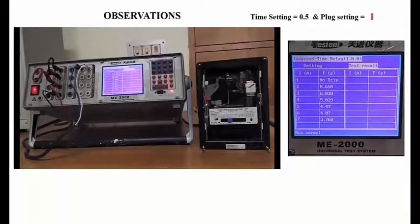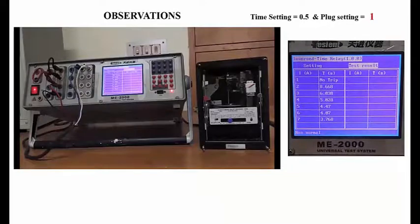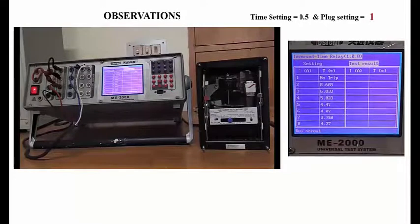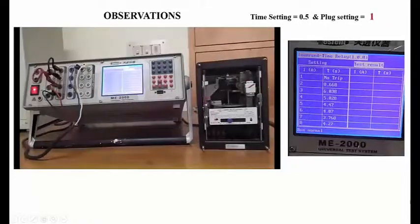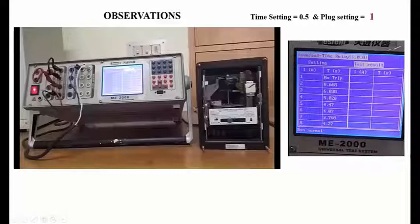Seven amperes is the maximum rated current of the relay. At I = 8 amperes, the relay overloads — a beep sound was heard and the displayed time is not valid, as the relay should only operate at currents up to 7 amperes. The reading corresponding to 8 amperes is therefore incorrect, and 'overload' should be written in place of the displayed value of 4.27 seconds.